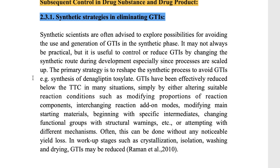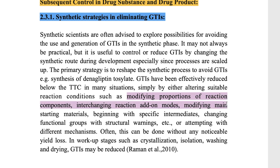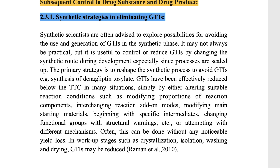Regarding synthetic strategies for eliminating genotoxic impurities (GTIs), scientists are advised to find possibilities for avoiding the use and generation of GTIs in the synthetic phase by changing the synthetic route during development. The primary strategy is to reshape the synthetic process by altering reaction conditions, such as modifying proportions of reaction components, interchanging reaction modes, or modifying starting materials. In the workup stages — crystallization, isolation, washing, and drying — these steps may also reduce GTIs.